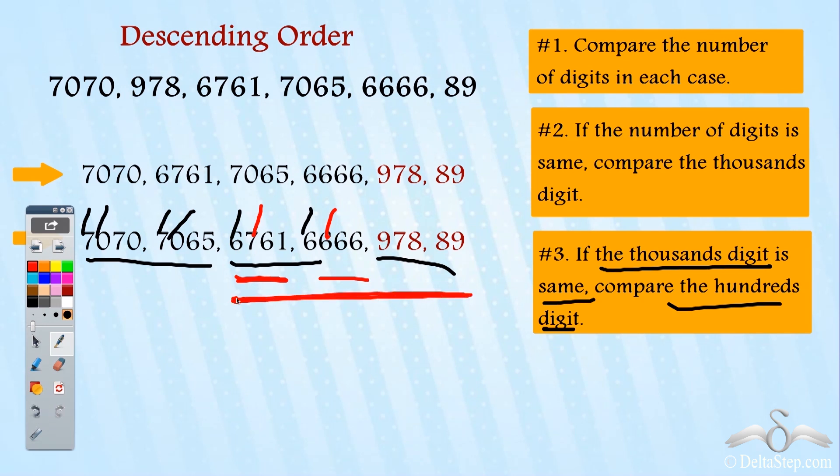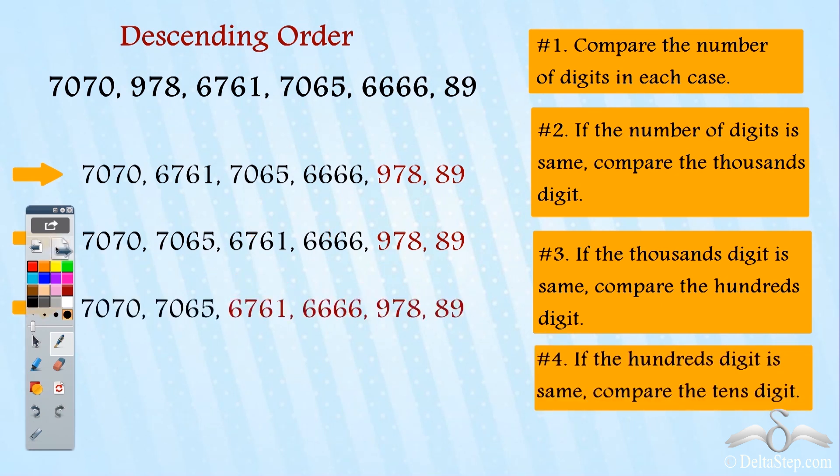These four numbers are arranged in the correct sequence. So this is what I have: 6761, 6666, 978 and 89.